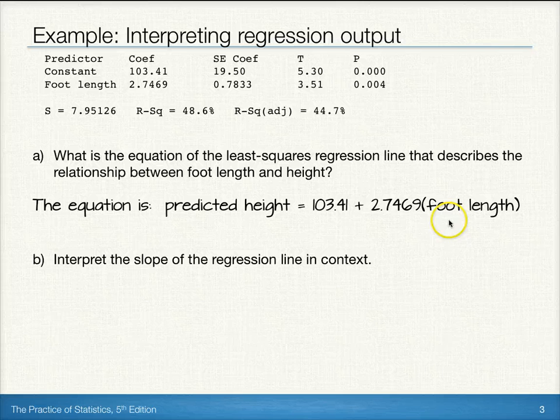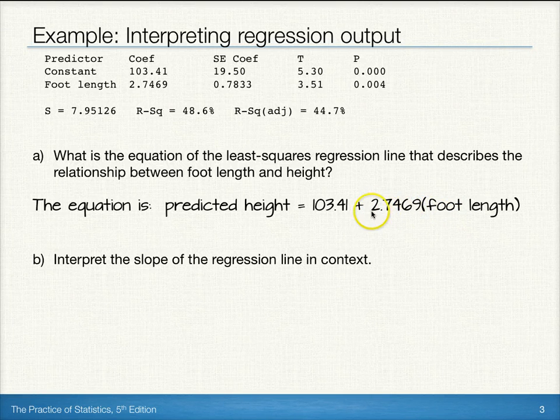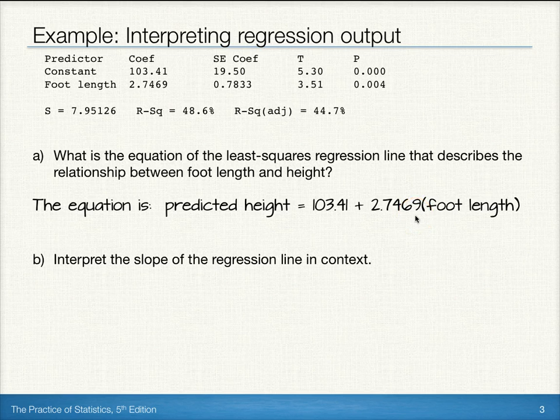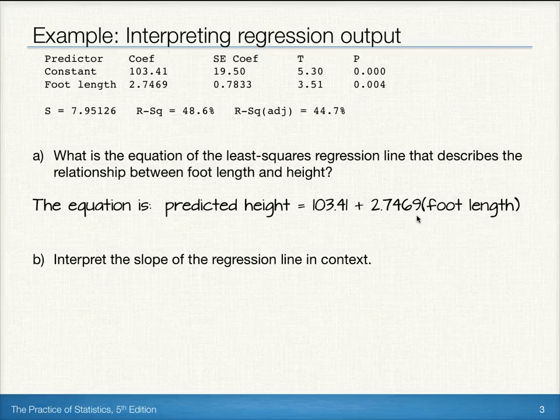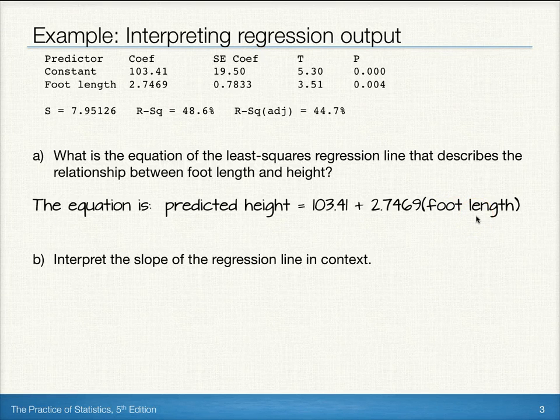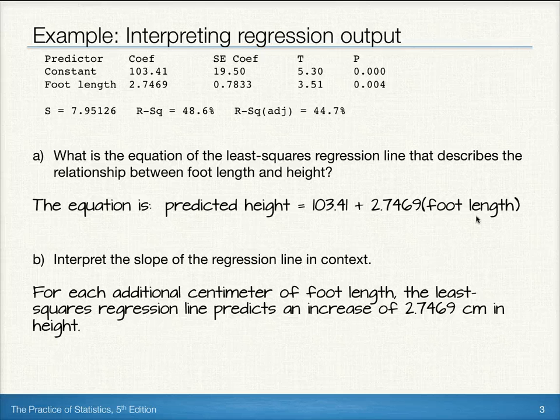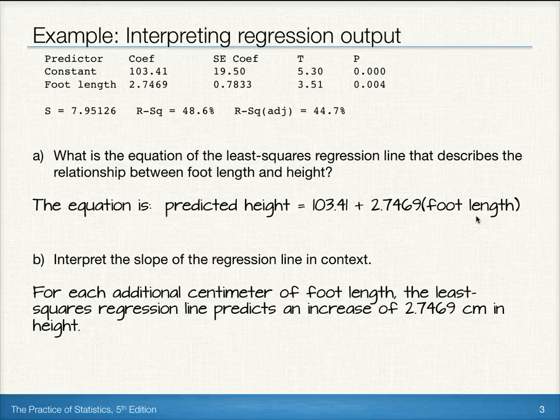Next, let's interpret the slope of this regression line in context. Our slope is 2.7469. Recall that the slope tells us the predicted amount of increase or decrease for a one-unit increase in x. So in the context of this problem, for each additional centimeter of foot length, the least squares regression line would predict an increase of 2.7469 centimeters in height.